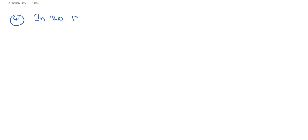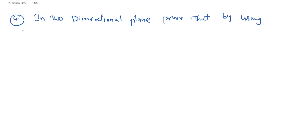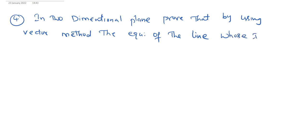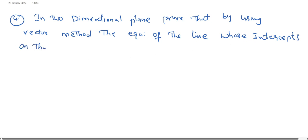Fourth question: In the two-dimensional plane, using vector method, prove that the equation of the line whose intercepts on the axes are a and b is x/a + y/b = 1.